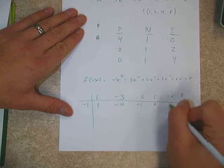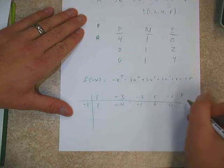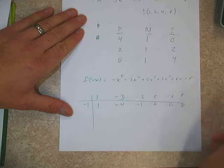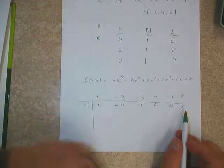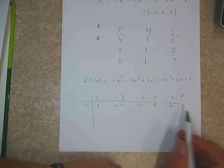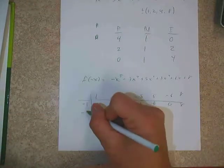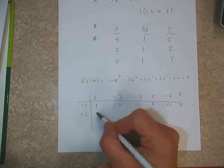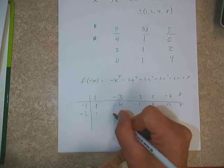We'll go: bring down 1, multiply to get negative 1, giving us negative 4, then negative 6, that gives us 0, and that gives us 8. So that's not the right one because we have an 8 remainder.